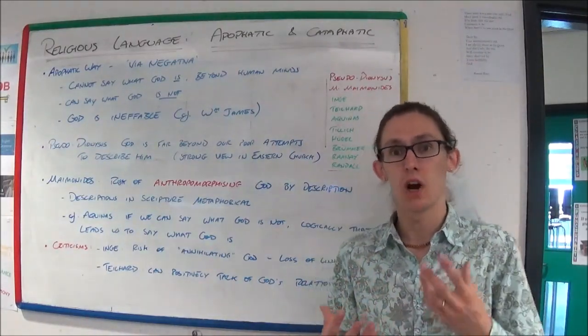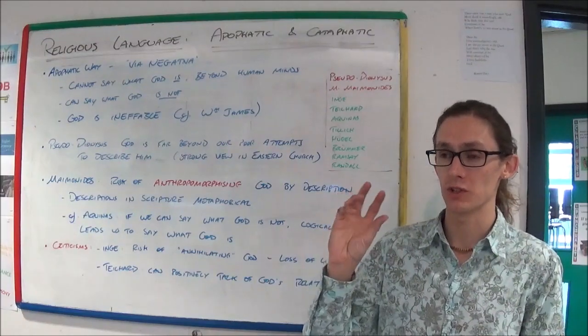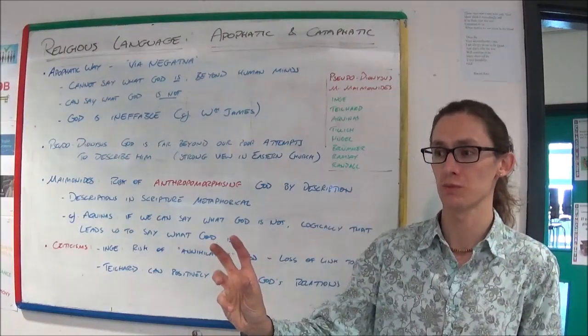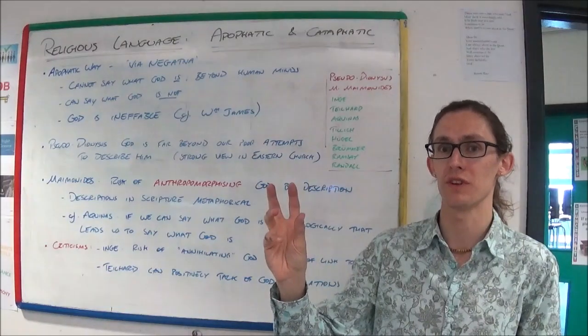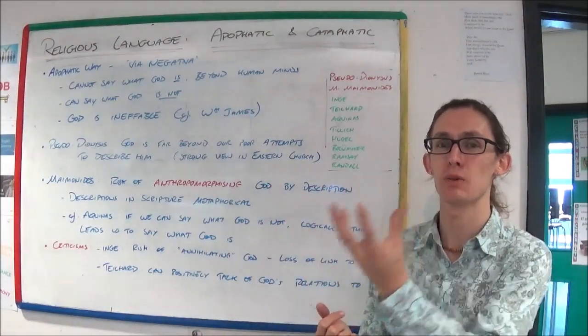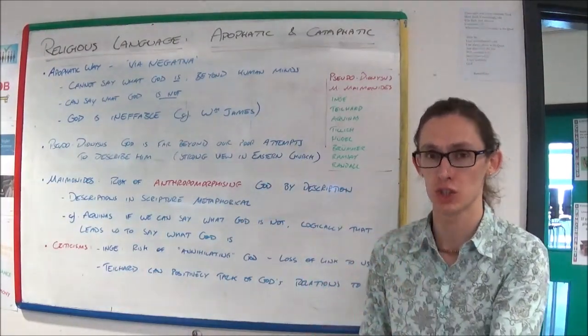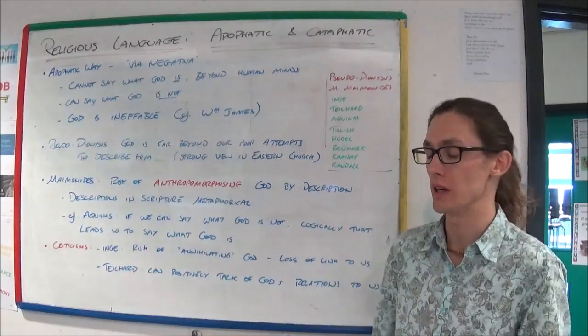So the via negativa overall has got strength, since it's cautious, and doesn't risk offending God, but the big weakness is it doesn't tell us very much. For this, we need to have a look at the via positiva.